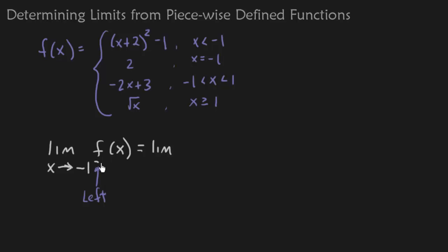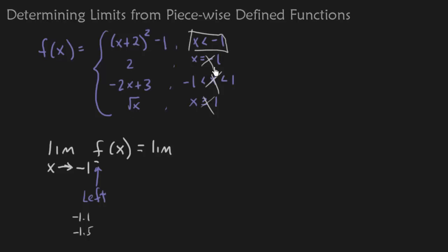Since I'm approaching -1 from the left, those are points like -1.1 or -1.5 — points slightly to the left of -1. Negative 1.1 is not bigger than 1, so it's not in that piece. I'm not actually at -1, but I'm slightly to the left, so the only place I am is the piece where x is less than -1. Slightly left of -1 means you are less than -1, so I rewrite my limit with the appropriate function piece.